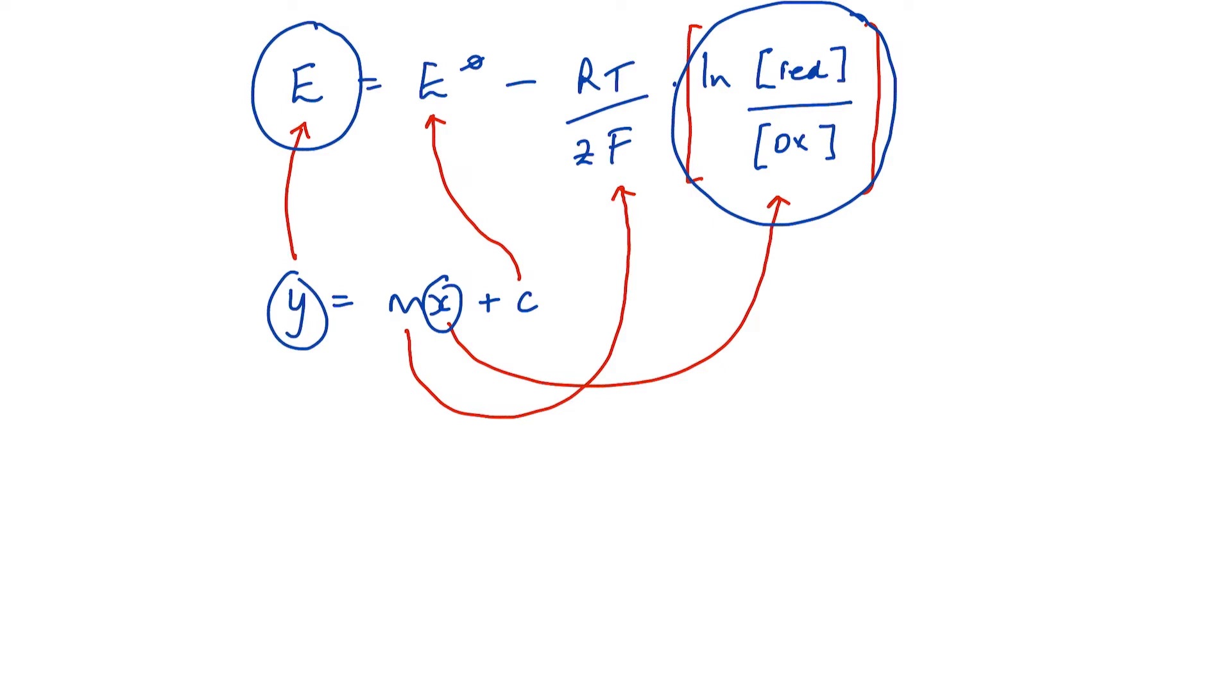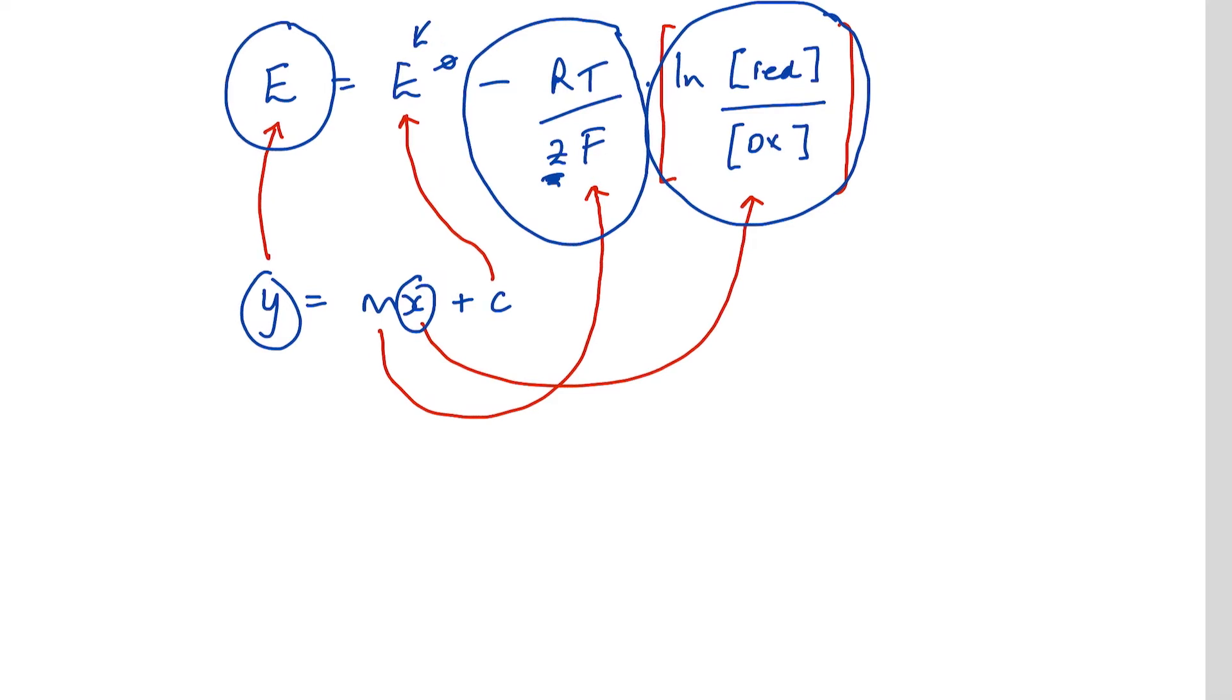I would then be in a position to identify the standard electrode potential because that's the intercept on the y-axis, and m using the gradient of the line, the slope of the line that we produce in this graph. I'm going to be able to come up with a value for z, which is essentially the charge on the ion. So the first thing I need to do is to work out my values for x because I have been given.